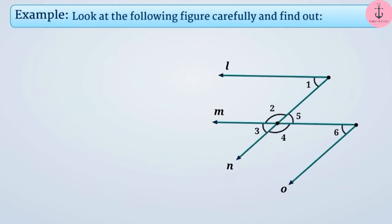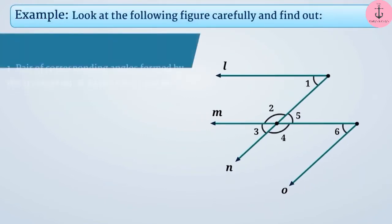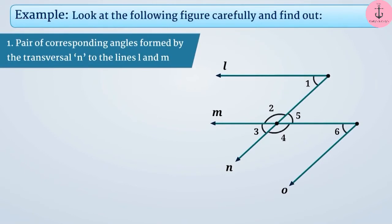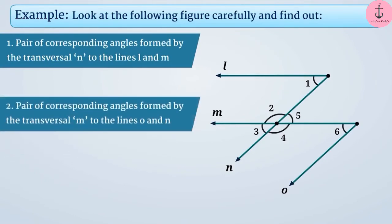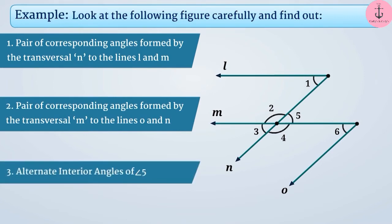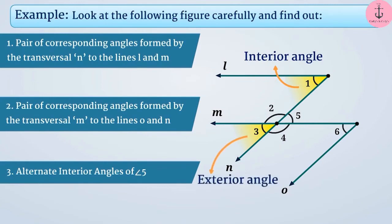In the given figure, the angles formed by transversal N to lines L and M are angle 1, angle 2, angle 3, angle 4, and angle 5. Angles 2 and 1 have different vertices, are formed on the same side of the transversal, and one is an interior angle while the other is exterior — so they form a pair of corresponding angles. Apart from these, there is no other pair of corresponding angles formed by transversal N.